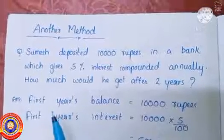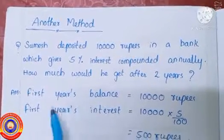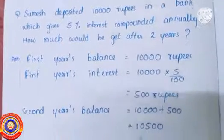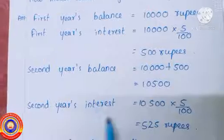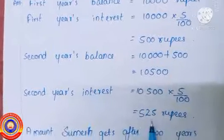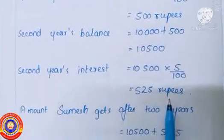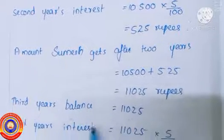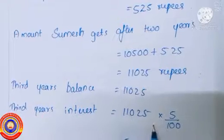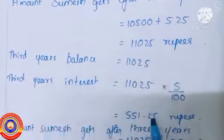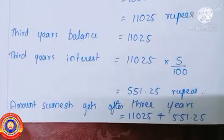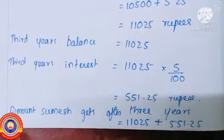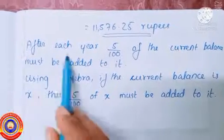We have seen that if interest is compounded annually, then first find the first year's interest and add it to the principal to find the second year's principal. The second year's interest is added to the second year's principal to get the third year's principal. This is continued, but for a period of three years more than six steps are needed. Here is a method to calculate it directly.